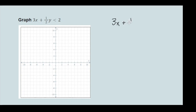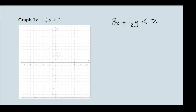We've got 3x plus one-half y is less than 2. This one is also going to be a dashed line when we graph it because it does not have the line under the inequality sign — it does not include any of the points that are actually on this line. The line will act purely as a boundary.